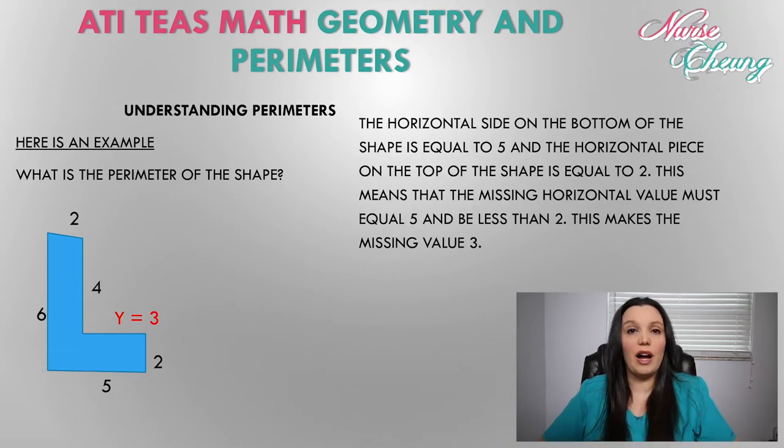Moving on to try to figure out what the y value is of our equation, we know that the horizontal side on the bottom of the shape is equal to 5 and the horizontal piece on the top of the shape is equal to 2. This means that the missing horizontal value must be equal to 5 but less than 2. We subtract those, 5 minus 2, and we get the missing value for y is 3.